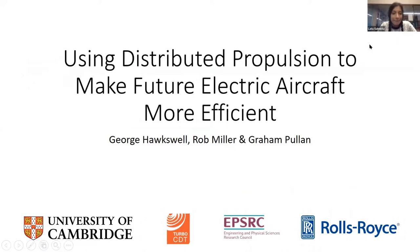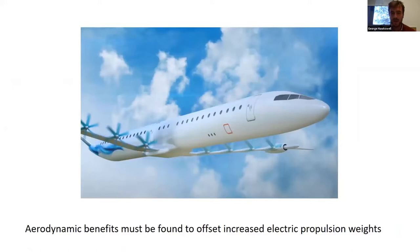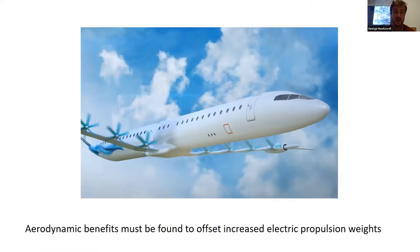We'll be talking about distributed propulsion and how it might allow electric aircraft to be viable in the future. We've already heard from Rob about different aircraft fuels and ranges. For electric aircraft, the range is limited to about 600 miles at the moment. Batteries don't store as much energy per kilogram, so if you replace kerosene with batteries, you can't fly very far. To combat this, we need to look for other advantages of electric power systems to try to increase range.